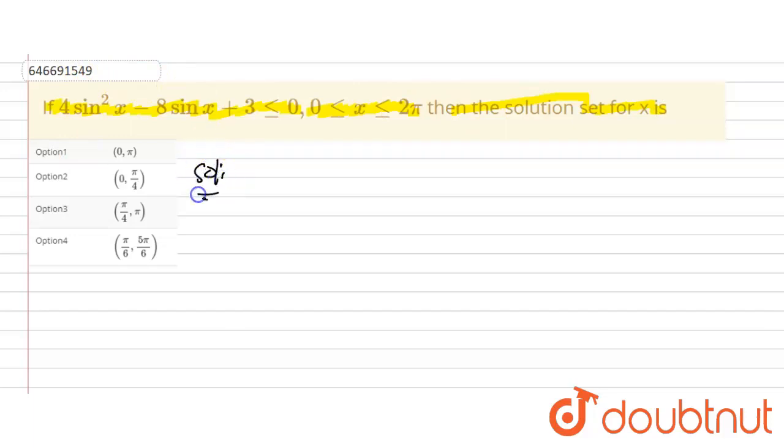Here given 4sin²x - 8sinx + 3 ≤ 0. We can see this in the form of a quadratic equation. So let's solve this question.